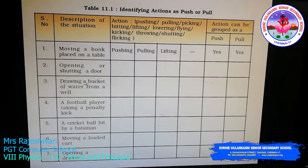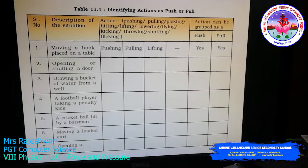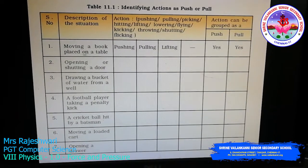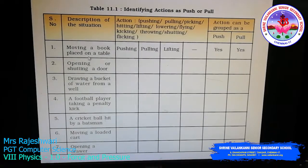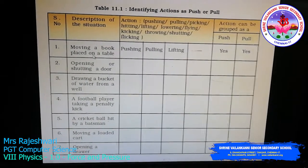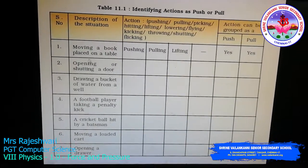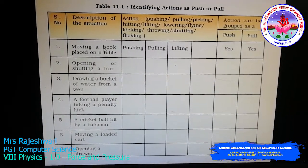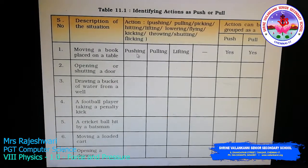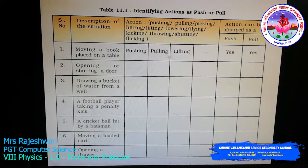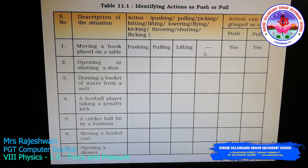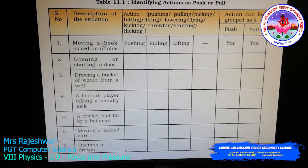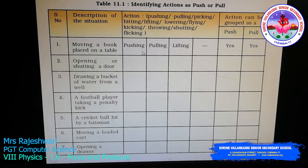Now look at this table identifying actions as push or pull. They have given a few descriptions. For example, moving a book placed on a table — you may move the book forward, towards yourself, or lift it up. All these actions apply to moving a book on a table. Based on the situation, you find out whether you are going to push, pull, or lift the book. Both push and pull are applicable here.